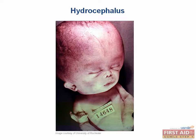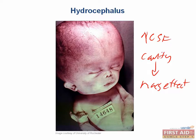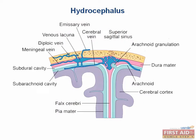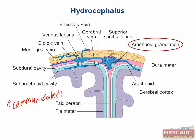Hydrocephalus means water in the head and is caused by increased CSF in the intracranial cavity leading to mass effect. There are four types: normal pressure hydrocephalus, communicating hydrocephalus, non-communicating hydrocephalus, and hydrocephalus ex vacuo. Communicating hydrocephalus is caused by impaired CSF resorption at the arachnoid granulations or excessive CSF production, with no obstruction within the ventricular system. This leads to increased intracranial pressure manifesting as papilledema or herniation. A classic clinical scenario is a patient who has recently recovered from meningitis, since meningitis can cause scarring of arachnoid granulations, impairing CSF reabsorption.